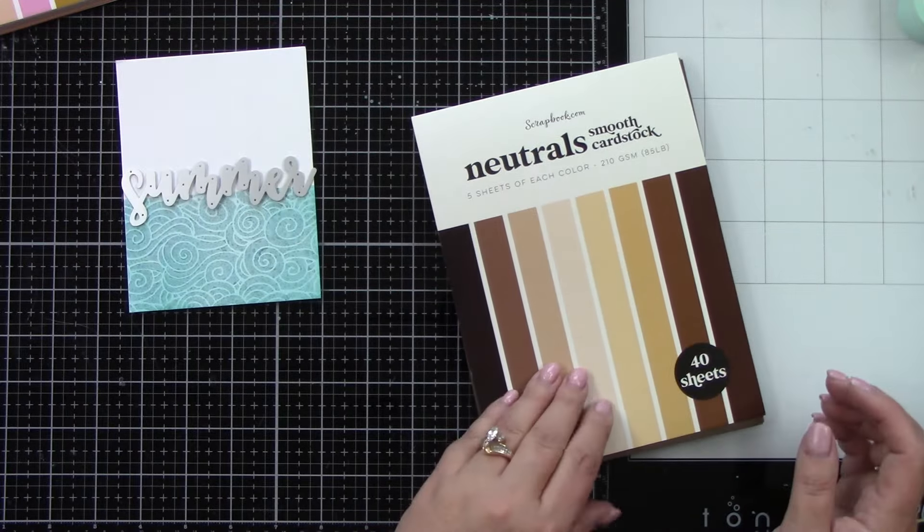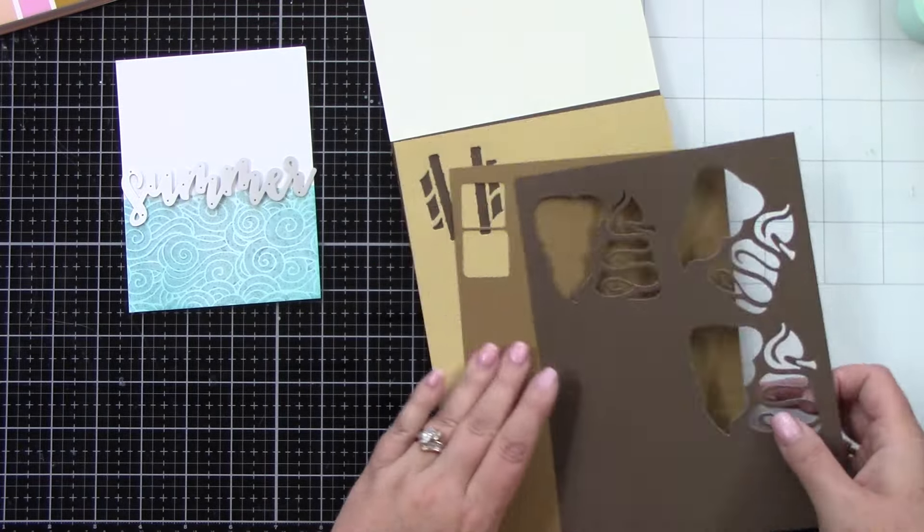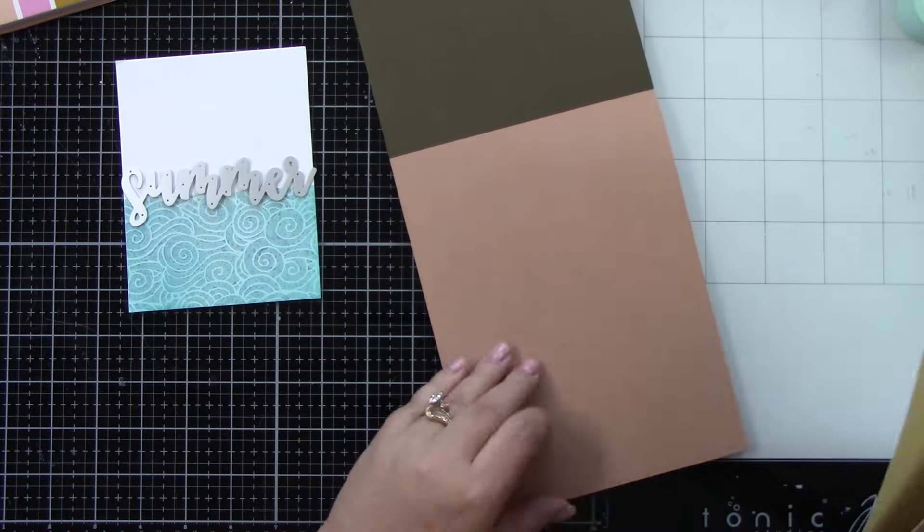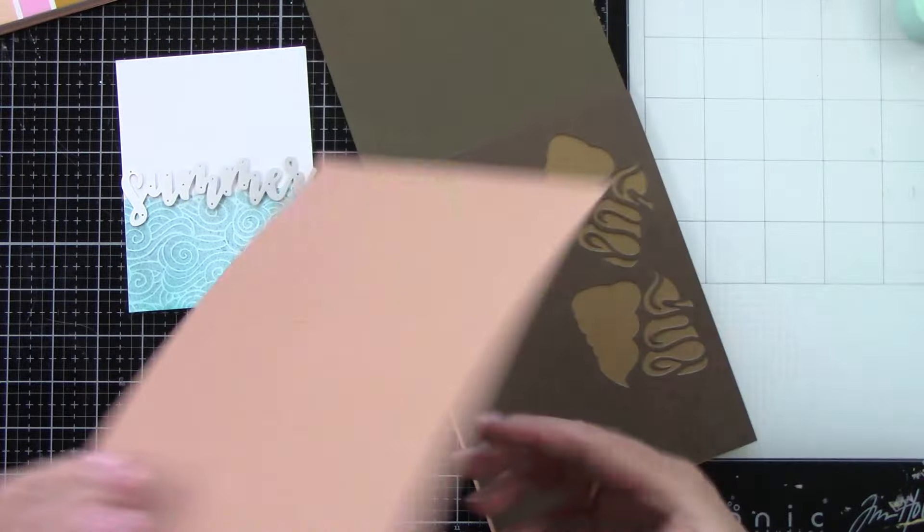And I will show this more closely once it dries so you can really get the effects of the shimmer. But let's get the rest of this card together. Look at that beautiful image of the stencil just by spraying that Distress Spritz on the background.